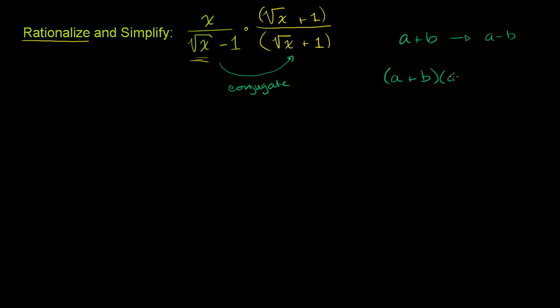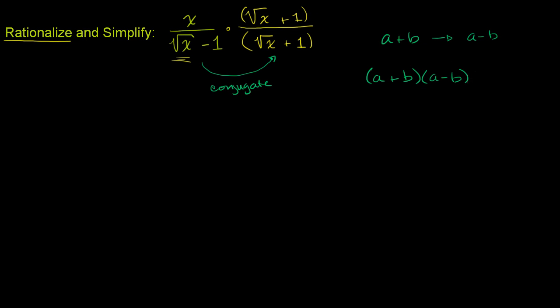If you do a plus b times a minus b, and we've seen this multiple times, this is the same thing - this is equal to a squared minus b squared. You can do the distributive property twice and see how everything simplifies out. It comes out to a squared minus b squared.